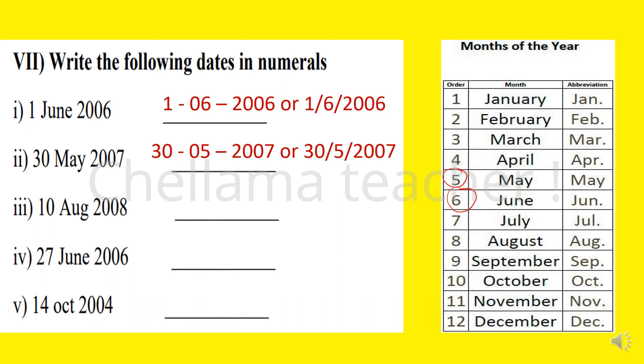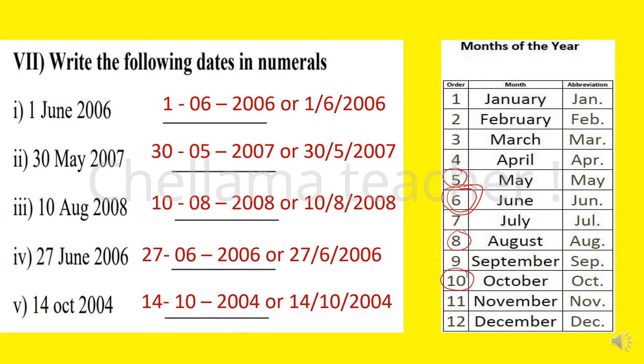Now 10 August. August is eighth month, so 10 dash 08 dash 2008, or 10-8-2008. Next question: June, again 6th month, so 27-6-2006. Next question: 14 October. October is the 10th month, so we can write 14 dash 10 dash 2004, or 14-10-2004. This is the way we can write the dates in numerals.